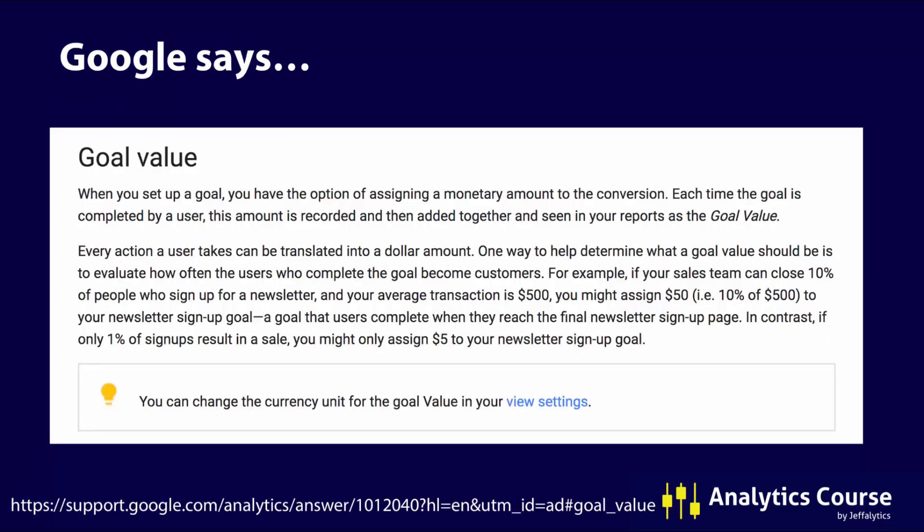First, let's look at the Google definition. Google says that for your goal value you should put in the value of what's going on, and they basically tell you to do some math. They say that if you have a newsletter subscription and your close rate is 10% on that newsletter, and your average transaction is $500, then you should assign $50 as the goal value of a newsletter signup. This is all the guidance they give you, and it's actually not wrong and doesn't go against what I recommend, but it's not very much to go on.